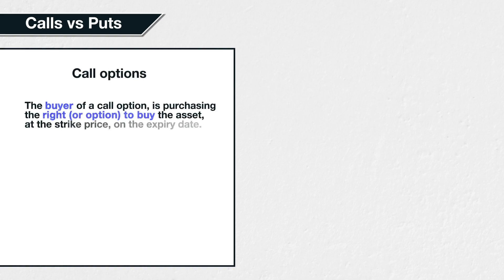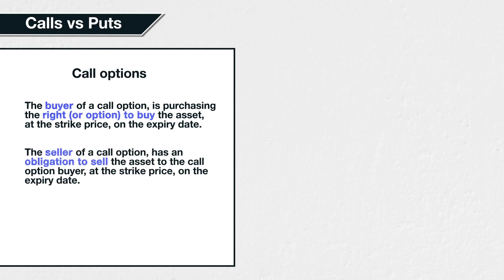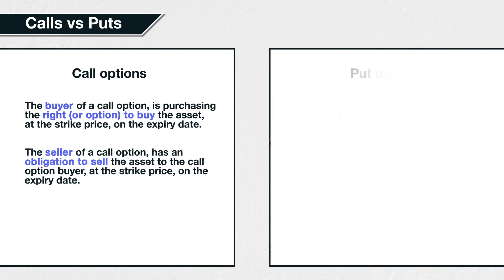It's important to understand the two different types of options — call options and put options. We will cover each in great detail in their own sections later in the course. The buyer of a call option is purchasing the right to buy the asset at the strike price on the expiry date. On the other side of this trade is the trader who is selling the call option. The seller of the call option has an obligation to sell the asset to the call option buyer at the strike price on the expiry date.